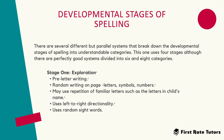The first stage is called exploration — this is the pre-letter writing stage. Children have lots of random writing on the page with letters, symbols and numbers. They may use repetition of familiar letters, such as a letter in their name, and they use left-to-right directionality as well as random sight words.